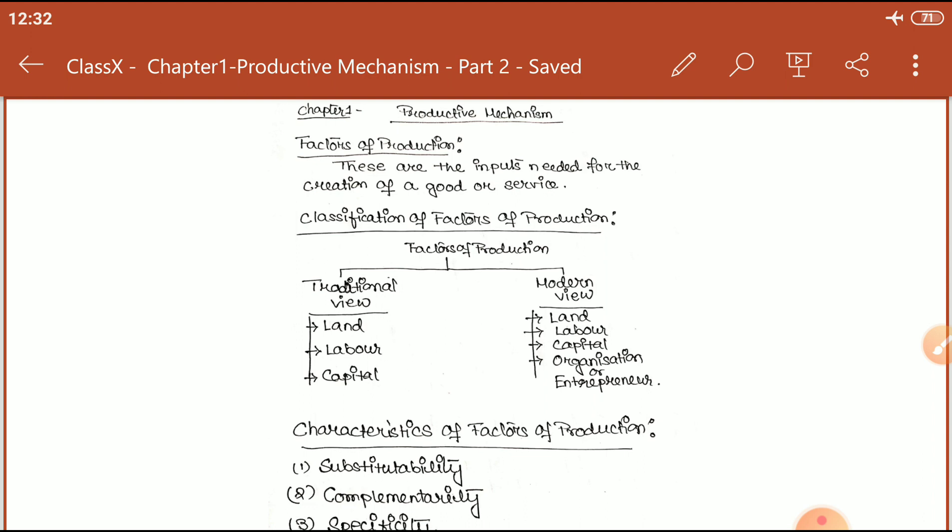As we discussed earlier, production is a chain which is the combination of input and the procedure to change the input into output, and after that outputs are marketed. So whatever inputs we need to run production or creation of utility via goods and services is called the factors of production.